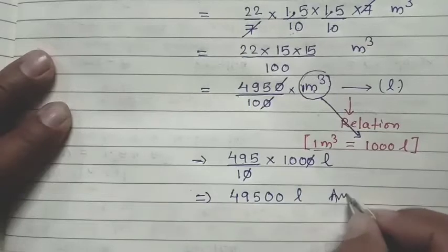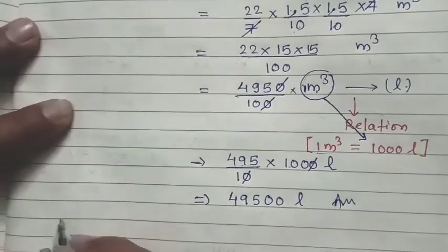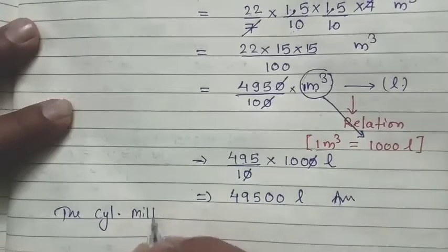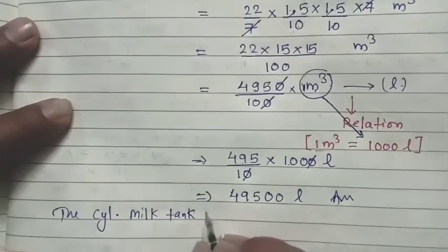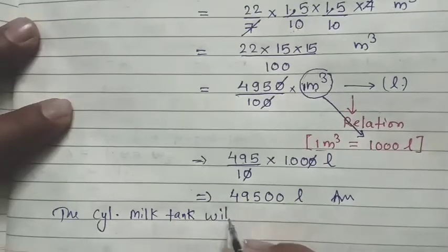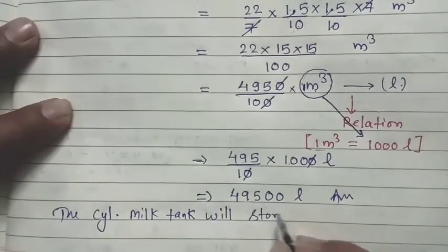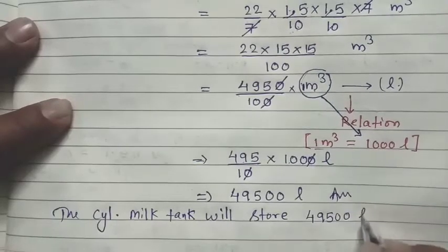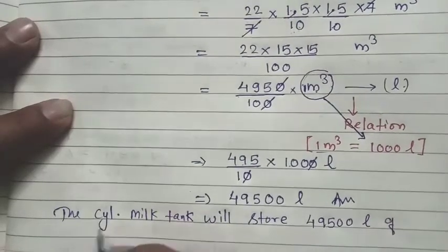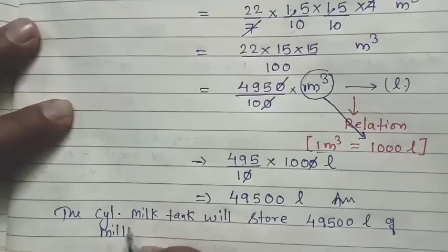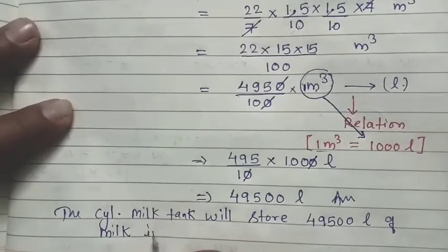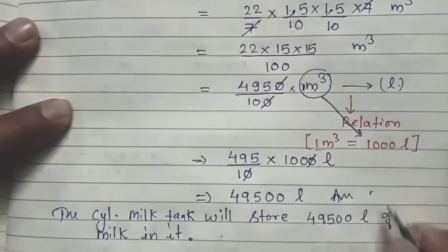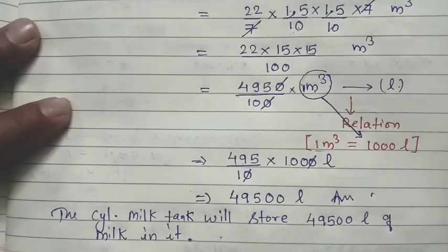And this is our final statement: the cylindrical milk tank will store 49,500 liters of milk in it. Hopefully you will understand. Thank you very much for watching.